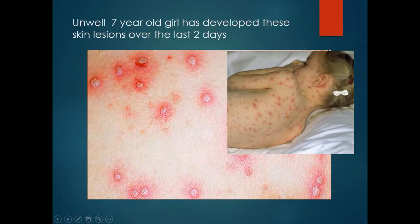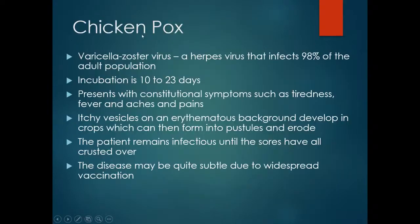Here we have an unwell seven year old girl who has developed these skin lesions over the last two days — a vesicular eruption on an erythematous base. This is chickenpox, caused by herpes varicella zoster.